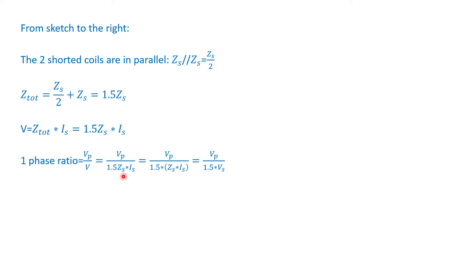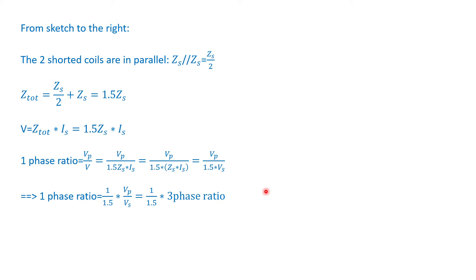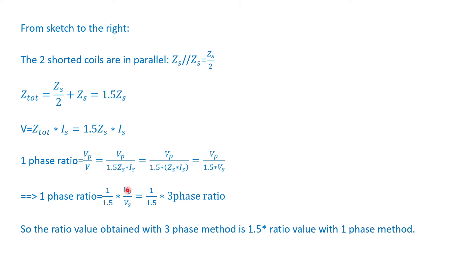The primary voltage we can measure directly. The measured secondary voltage in this case is 1.5 times the secondary impedance times the secondary current. Rearranging, the secondary impedance times the secondary current is just the secondary phase voltage, so we get the primary voltage divided by 1.5 times the secondary voltage. Therefore, the single-phase voltage ratio equals (1/1.5) times the three-phase voltage ratio — meaning the three-phase ratio value is 1.5 times the single-phase ratio value.